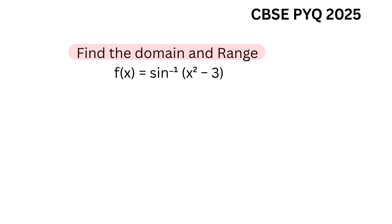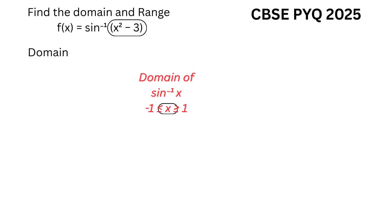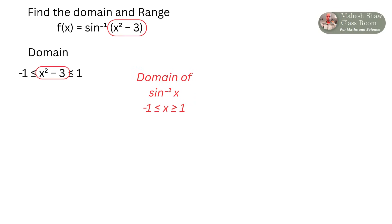Find the domain and range of f(x) = sin⁻¹(x² - 3). We know that the domain of sin⁻¹(x) is from -1 to 1, both inclusive. Now replacing x with x² - 3, we get x² - 3 ≥ -1 and x² - 3 ≤ 1.